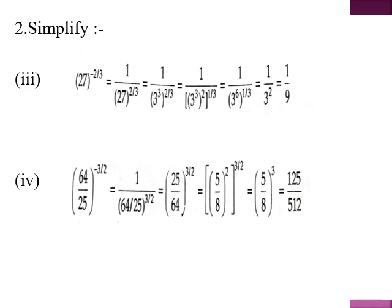The fourth example involves a rational number raised to a negative power. We exchange numerator and denominator and the power becomes positive. This gives 25 upon 64, whole raised to the power 3 by 2. Now 25 is 5 squared and 64 is 8 squared. We take out the square common: applying power of power, 2 multiplied by 1 by 2 cancels, leaving power 3. So 5 cubed equals 125 and 8 cubed equals 512, giving the answer 125 upon 512.